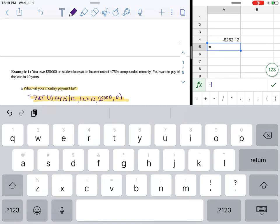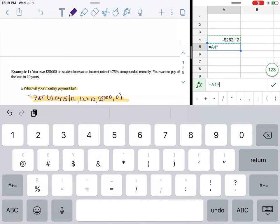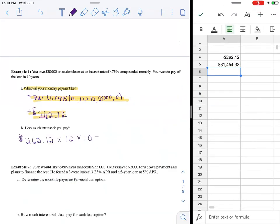Again, I can use this as a calculator if I'd like. So I'm going to do equals, and this is something I like to do: I like to select this cell because then it puts in the entire value, times the 12, times the 10. Now it's negative because it's saying you're in debt. So this is saying over the 10 years I will make a payment totaling $31,454.32.